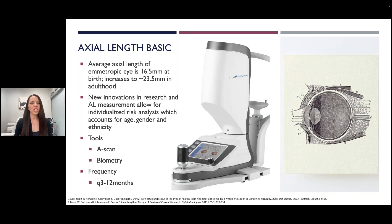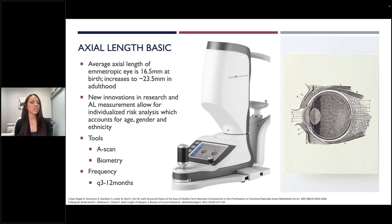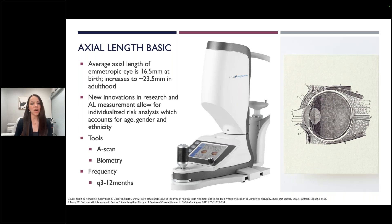Axial length basics: when we're born, the eyeball length is about 16.5 millimeters — itty-bitty tiny. They grow really, really fast in the first couple of years. At adulthood, an emmetropic eye average is about 23.5 or 23.6 millimeters. Anything over that would be moving toward flags for myopia. We now have ways to not only measure, but also individualize analysis of axial length data based on age, gender, and ethnicity — though that's a work in progress. We can measure eye length a couple of different ways: usually A-scan and biometry — of course Myopia Master is biometry. The recommended frequency for measurements really depends on age, prior speed of growth, and what treatments we're using. Typically across the planet we do every three to twelve months, and on average six months would be most common.